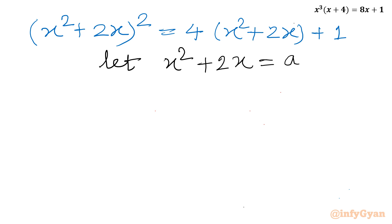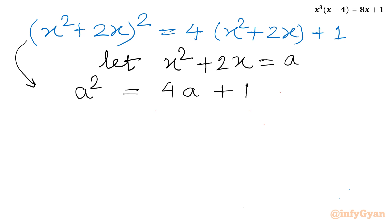So our equation becomes A squared equal to 4A plus 1. Taking all the terms to the LHS: A squared minus 4A minus 1 equal to 0.